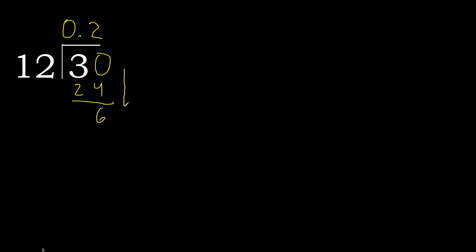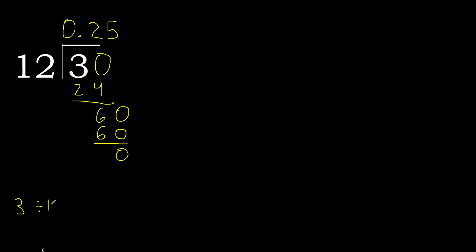Next. There is no number, therefore complete — always complete with 0. Point is here: 0 point. 60. 12 multiplied by 5 is 60 — not greater. Subtract 0. Therefore finish. 3 divided by 12 equals 0.25.